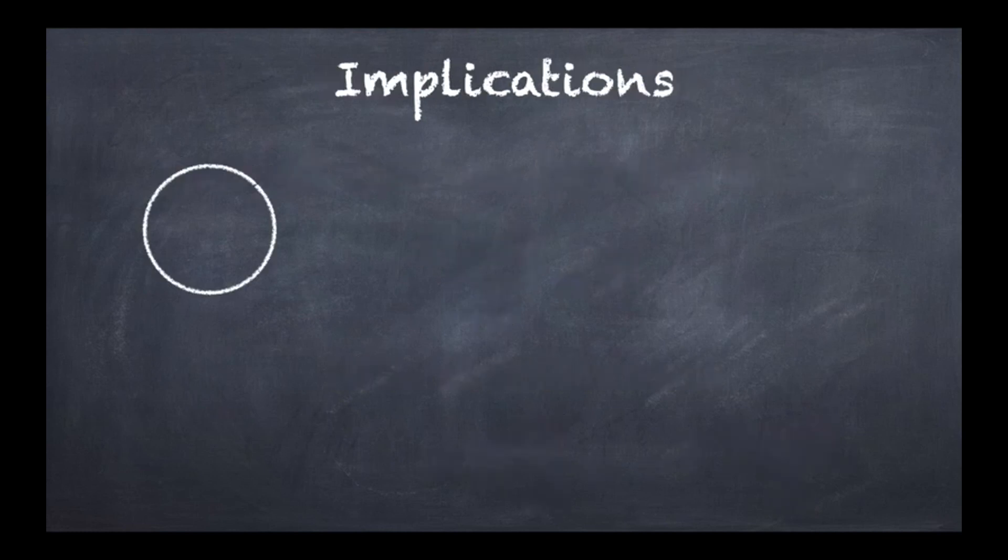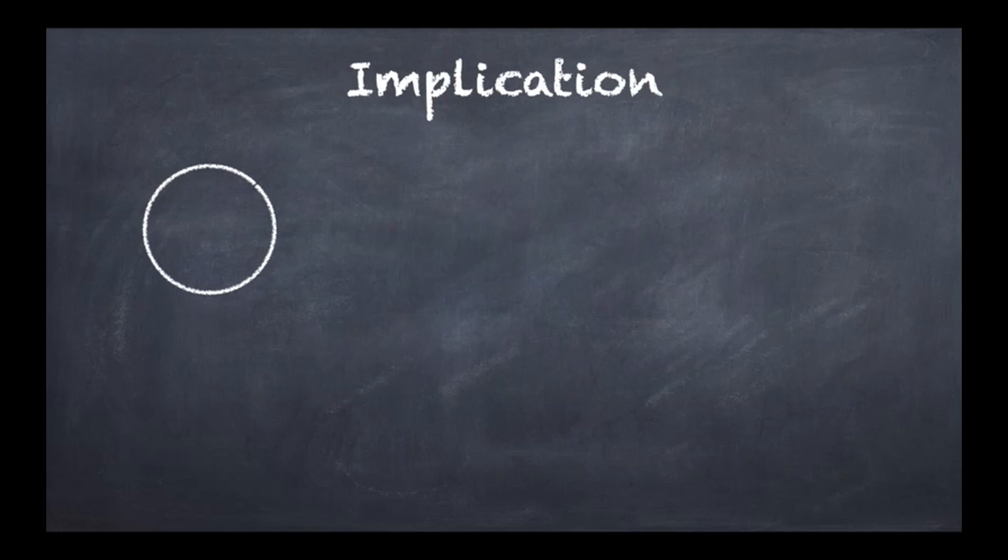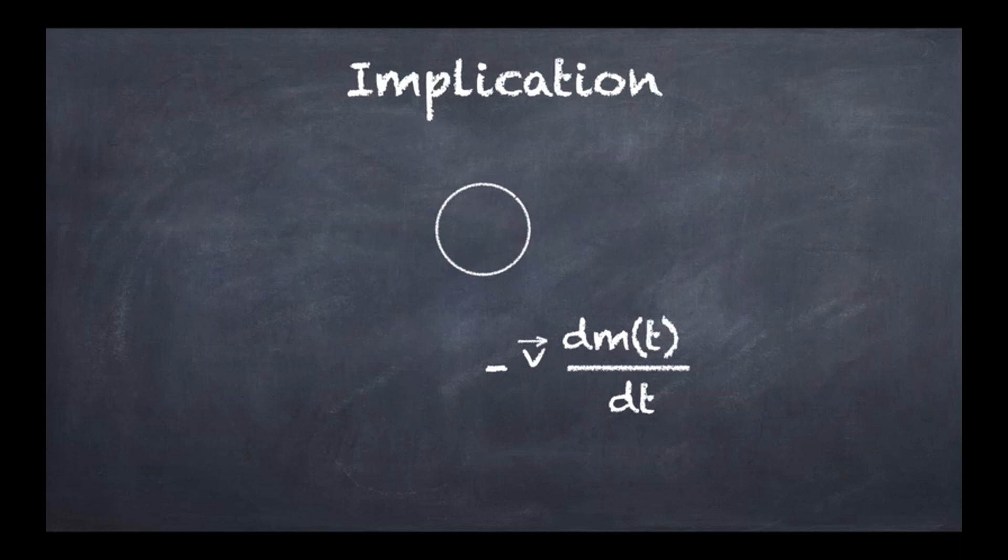So what we are going to see now that we have a purported generalization of Newton's second law, we are going to see what could be the implication of this particular equation. Now this object is seen from an inertial frame with a velocity v, and as it is moving, what's going to happen is that there is a term which we have seen on the right-hand side of this generalization proposed for the second law of Newton: minus v dm over dt.